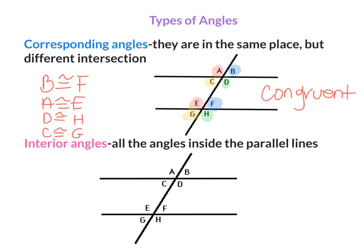Interior Angles. These are all the angles inside the parallel lines. With my two parallel lines, the angles inside are C, D, E, and F. These angles are not congruent to one another.